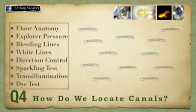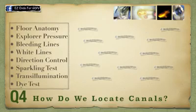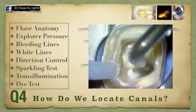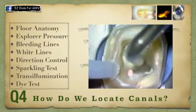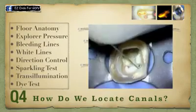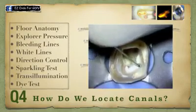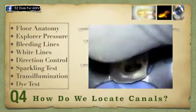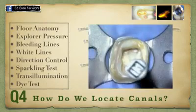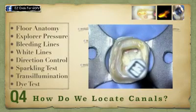Direction control theory was introduced by David Green back in 1972. It states that whenever the canal is on one side and not in the middle of the root, you look for the other canal on the other side — and you will definitely find one.